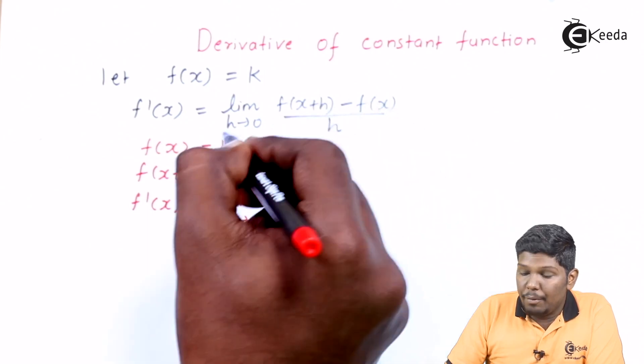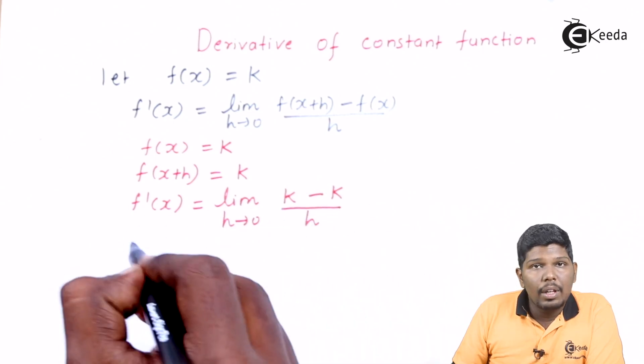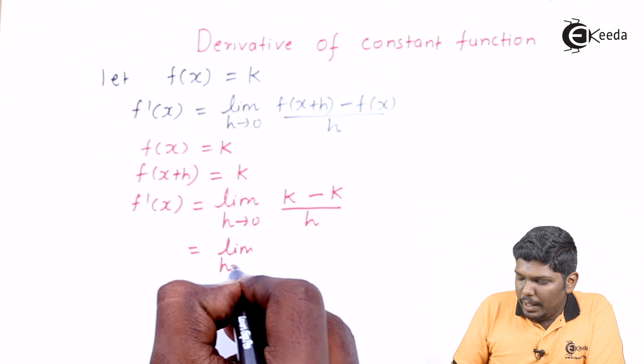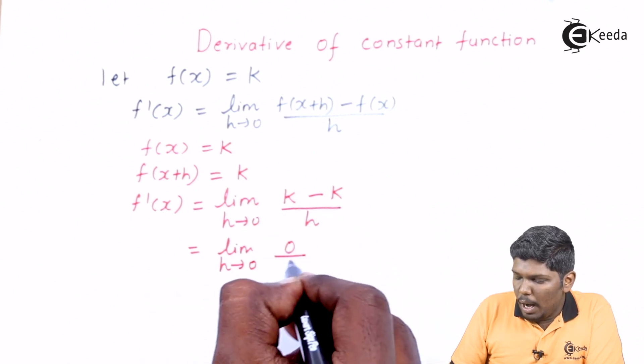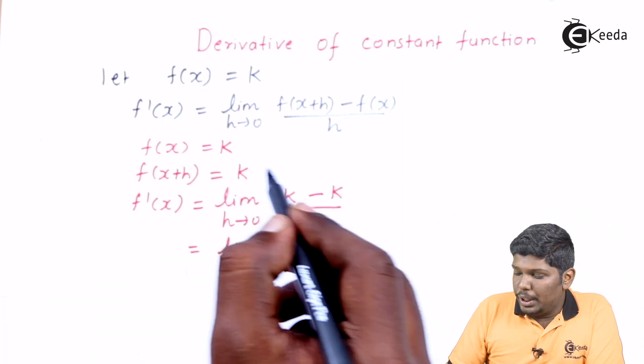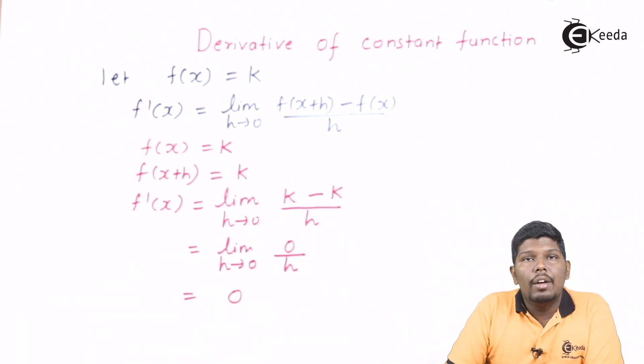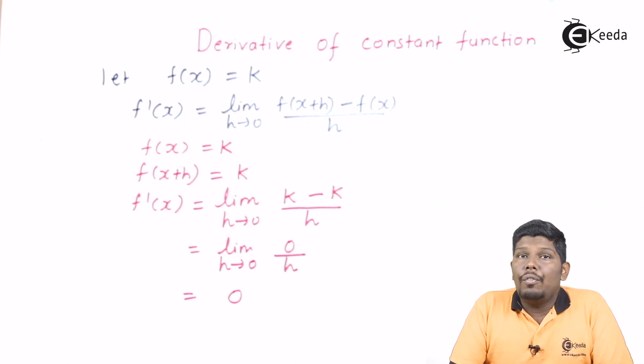So k minus k will give you 0. So limit h tending to 0, k minus k is 0 upon h. So 0 upon h will give you 0 and the derivative of this function will be 0. So remember friends, derivative of any constant function is equal to 0.